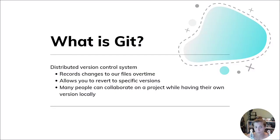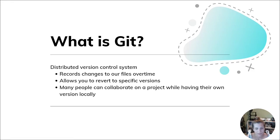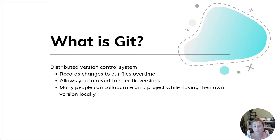First, before we just jump right into learning the basics of Git, let's understand what Git is. Git is a distributed version control system. It's a system that will record changes of our files over time, and it will help us be able to recall specific versions. Also, many people can collaborate on a project while having their own version locally.